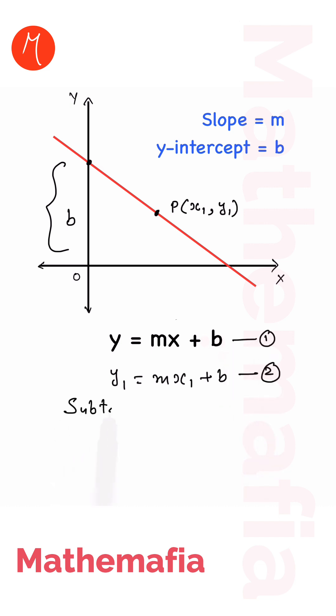Let us subtract two from one, so we will get y minus y1 equals mx plus b minus mx1 minus b. Now b and minus b will get cancelled and we will get y minus y1 equals m times x minus x1.